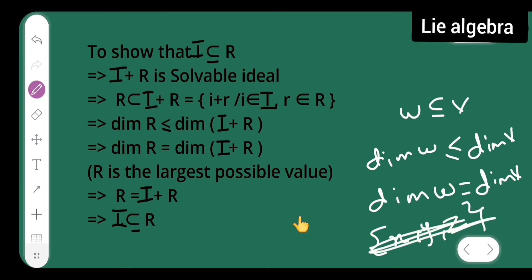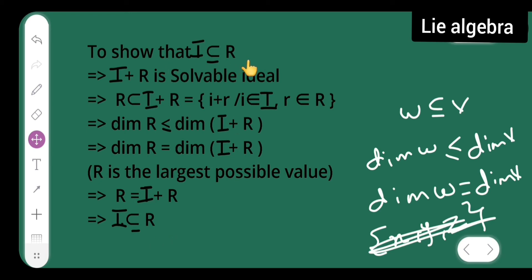Since r is of the largest possible dimension, this implies r = i + r, and therefore i is a subset of r. We were supposed to show that i is a subset of r, where i was any solvable ideal and r was the solvable ideal of largest possible dimension. So we have proved that, and we are done with this lemma.